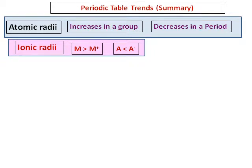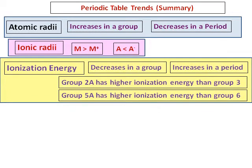The second thing you learned was ionic radii. Cations are smaller than the neutral atom and anions are larger than the neutral atom. Then we have ionization energy. Ionization energy decreases in a group and it increases in a period.